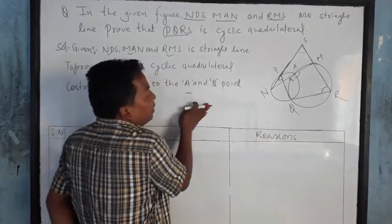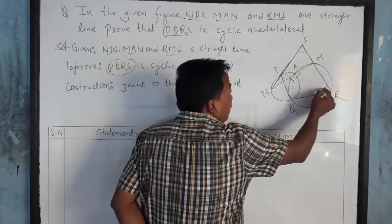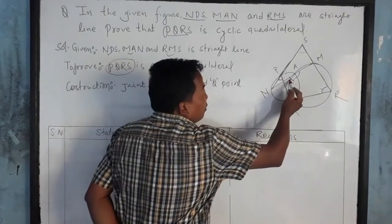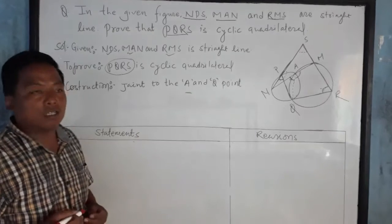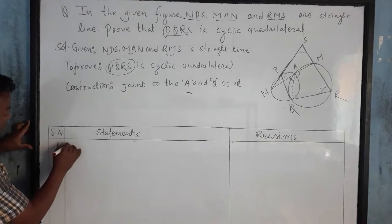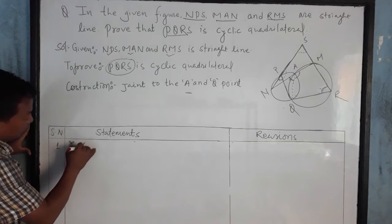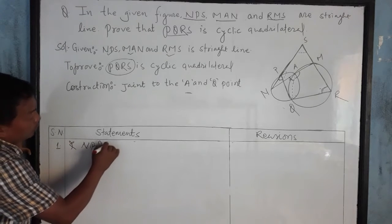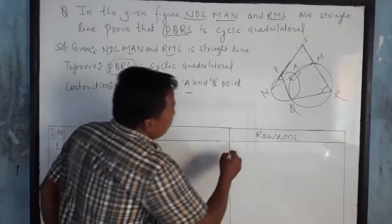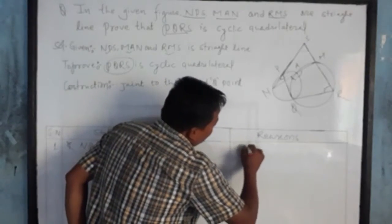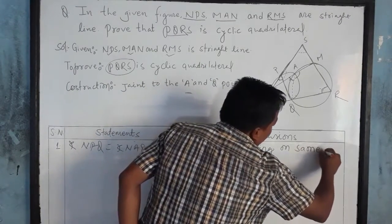This angle is the same. If you look at this angle, you can see this angle is equal. What is this angle? A1 is the angle. And PQ is equal to angle NAQ. If you look at this angle, you can see this angle is standing on the same arc.